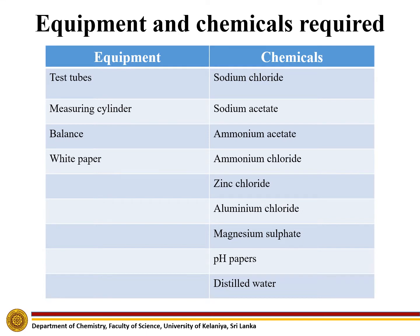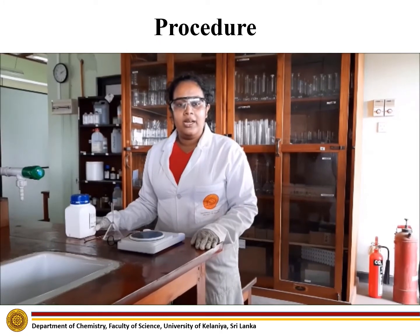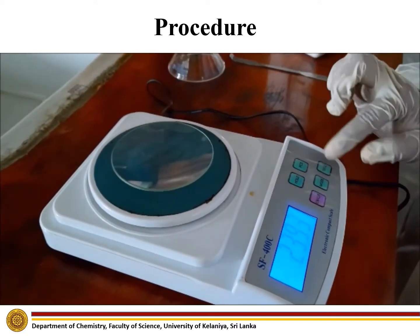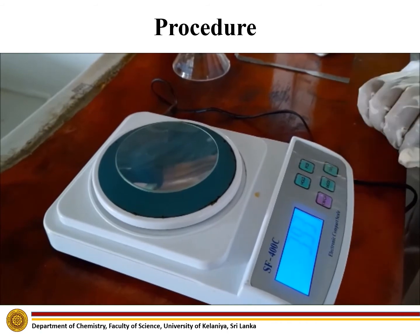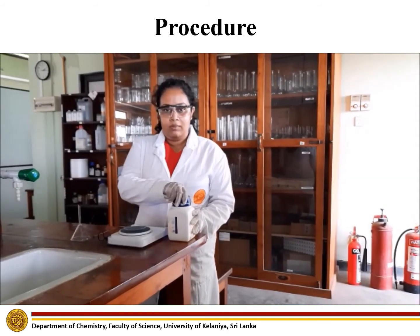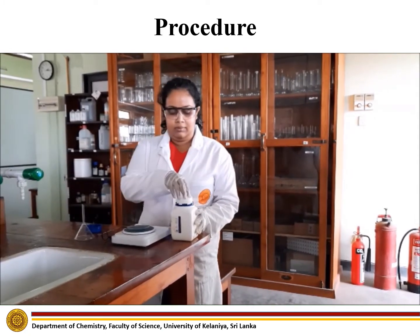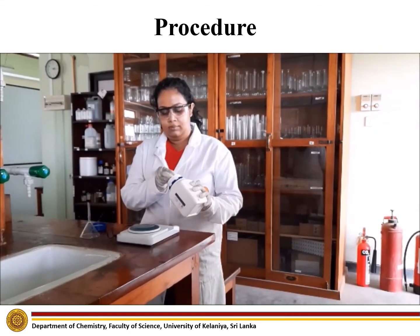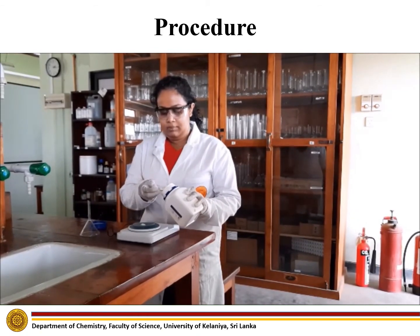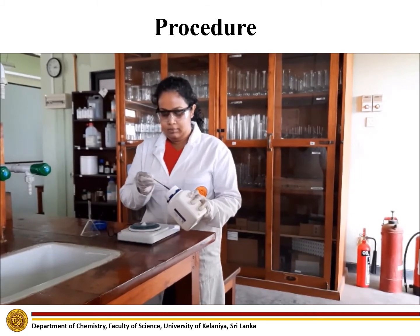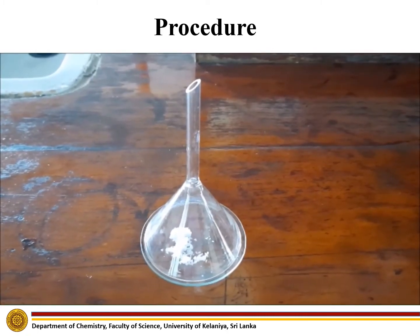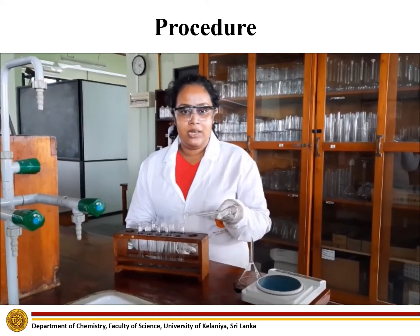Next, let's see how this experiment is performed. First, we measure 0.5 grams of aluminium chloride salt. Put the watch glass on the balance and make its reading 0, then measure 0.5 grams. Next, we put the measured salt into a test tube.